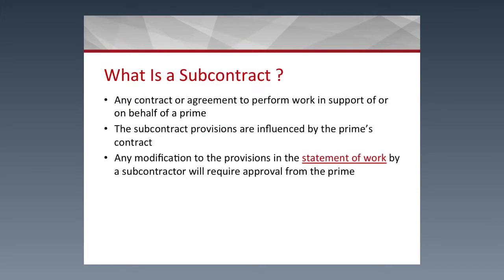A subcontract is an agreement to perform work on behalf of the prime. The subcontract provisions are influenced by the prime's contract. In this case, the two parties write out a statement of work, which outlines the procedures and methods the subcontractor will employ in accordance with the goals of the proposed project and in line with the prime recipient's contract.